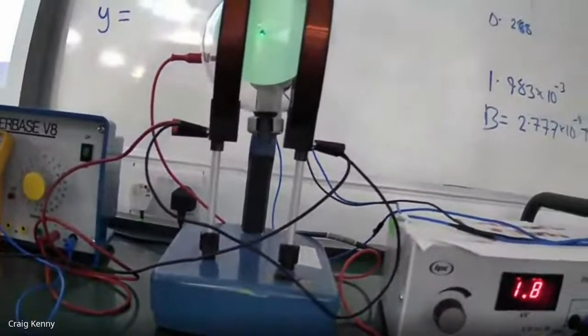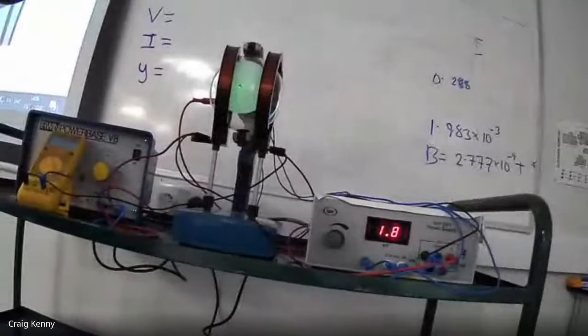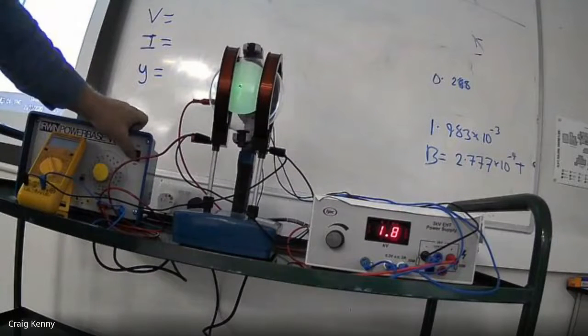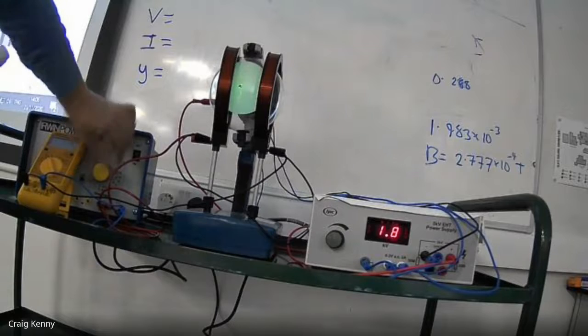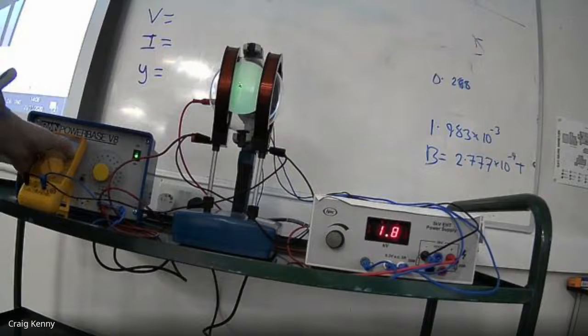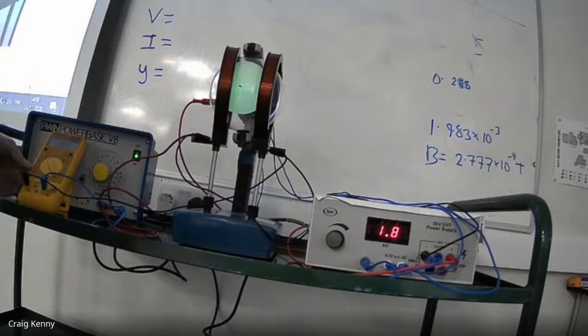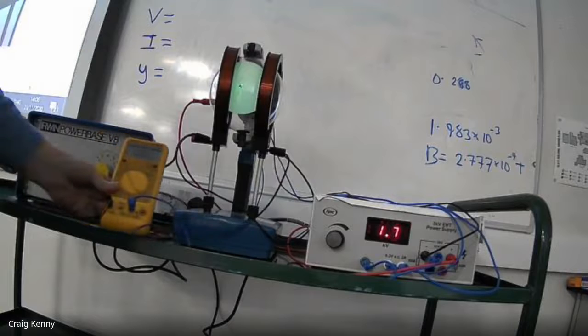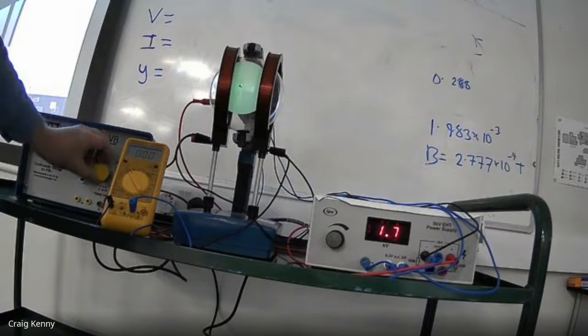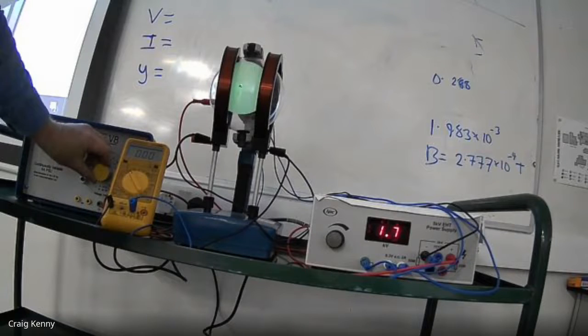Now what happens is when I turn on the Helmholtz coils and I run a current through those, starting off with zero current, so hopefully you can read that meter. And then I'm going to put around about 1.14 amps current.